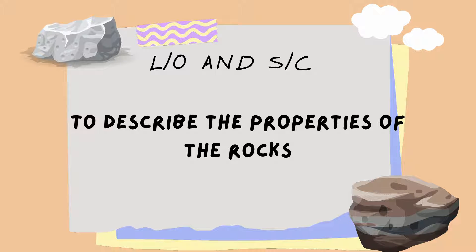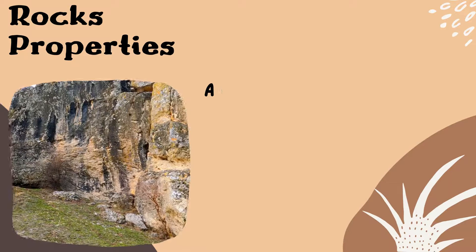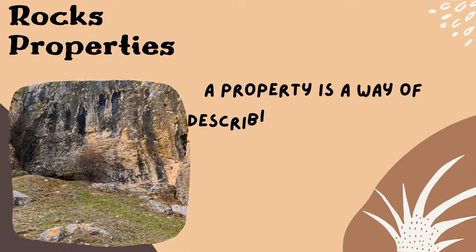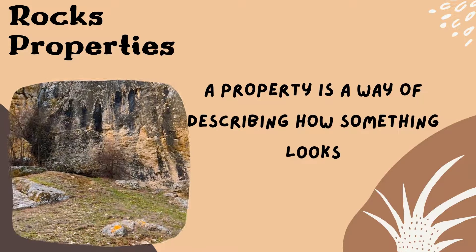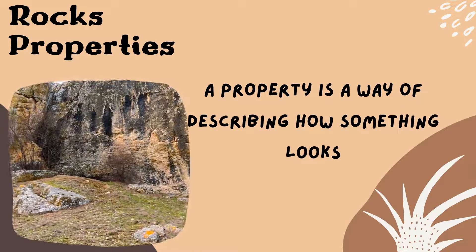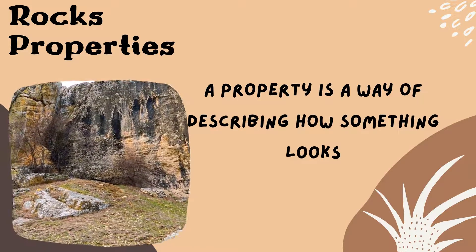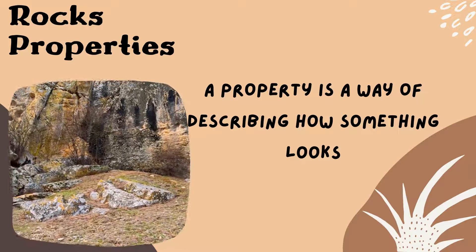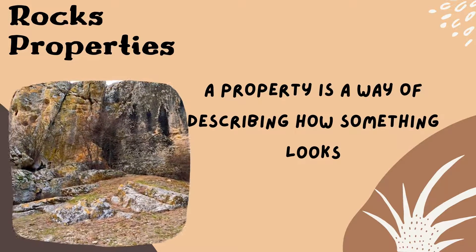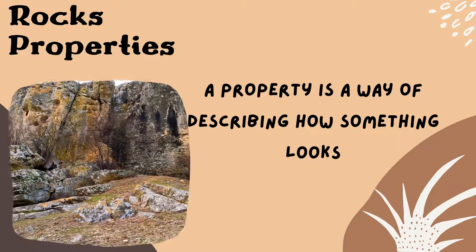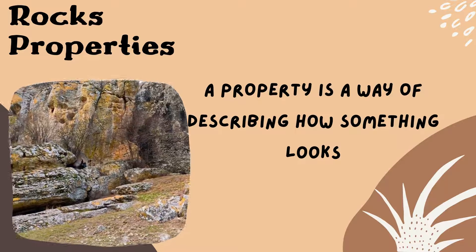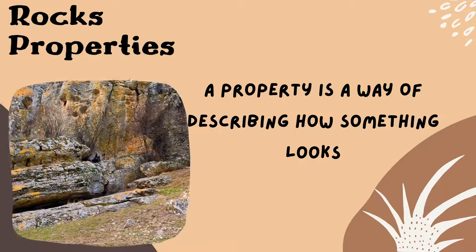So let us at the beginning know the meaning of property. A property is a way of describing how something looks. Scientists use properties of rocks to sort rocks into different categories and to identify new rocks.